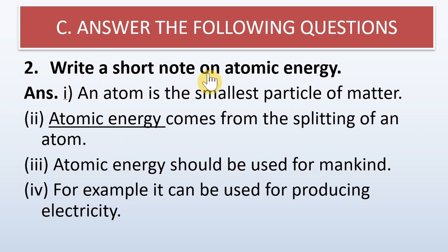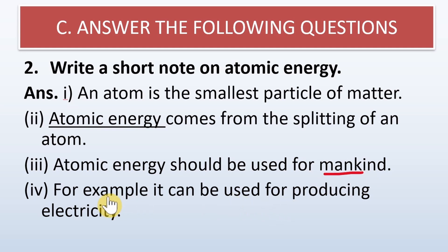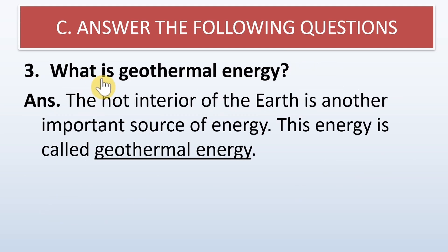Write a short note on atomic energy. An atom is the smallest particle of matter. Atomic energy comes from the splitting of an atom. Atomic energy should be used for mankind — for example, it can be used for producing electricity. It can give rise to a very large amount of energy, but atomic energy is very sensitive and must be used very carefully.